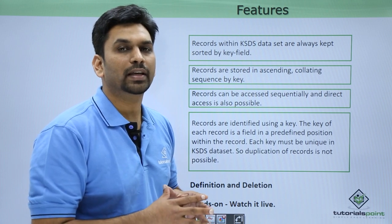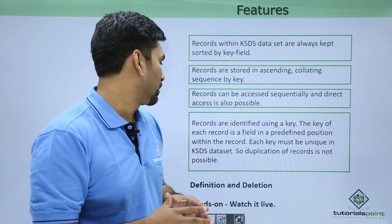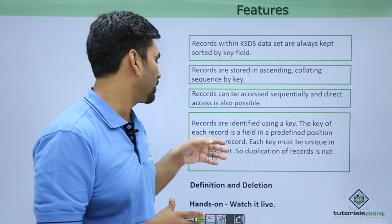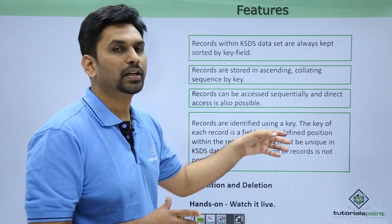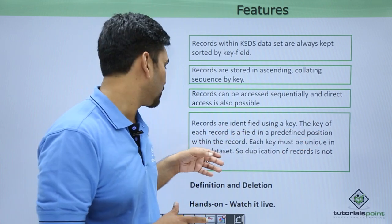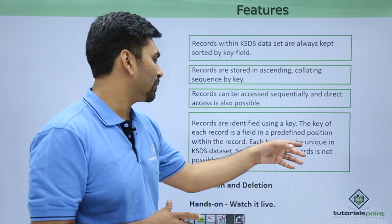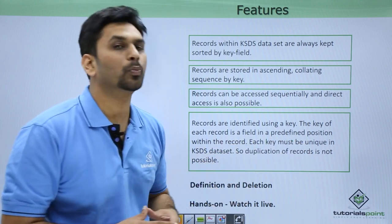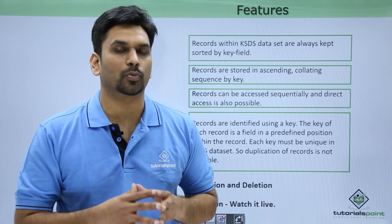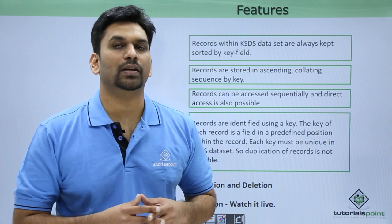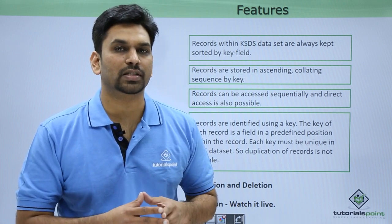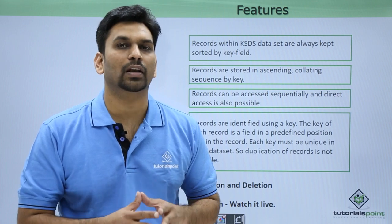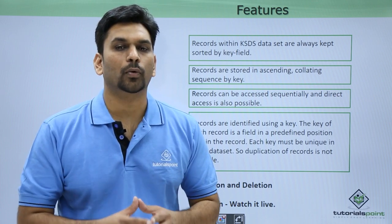To access records randomly you need to give the key and then you can access the record directly. Records are identified using a key. The key of each record is a field in a predefined position within the record and each key must be unique in the KSDS data set — duplication of records is not possible. While defining a cluster you need to define the key and the length of the KSDS as well.